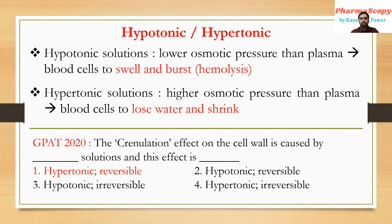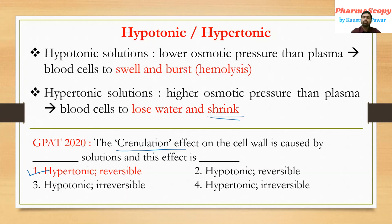In GPAT 2020, there was a question: 'The crenation effect on the cell wall is caused by which solutions, and its effect is?' The correct answer is hypertonic and reversible. Crenation is another word for shrinkage. They didn't ask directly what hypertonic solution causes, but asked in a twisted way. Any hypotonic or hypertonic solution effect is reversible — if you put those cells in an isotonic medium, the effect will be reversed.